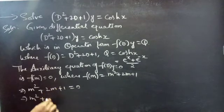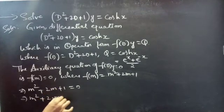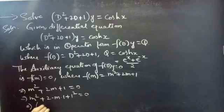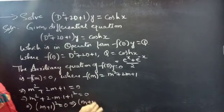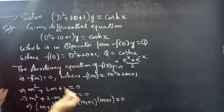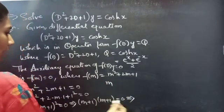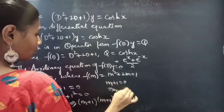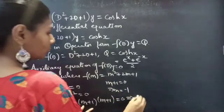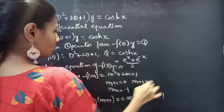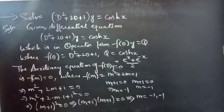We can write 2m as 2·m·1 and 1 as 1², which is in the form a² + 2ab + b², that is (a + b)² = (m + 1)² = 0. From this we get repeated factors (m + 1)(m + 1). Equating each factor to zero gives m = -1 and m = -1 — two repeated roots.